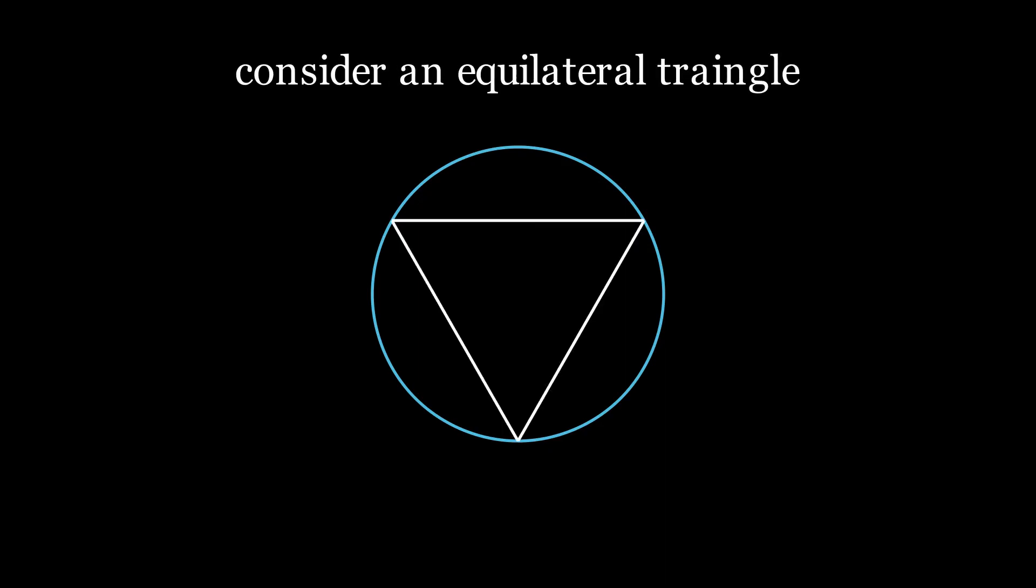Now consider an equilateral triangle and a circle inside it. Take any point inside the circle and look at the corresponding chord. You will observe that the length is greater than the length of the side of the equilateral triangle.